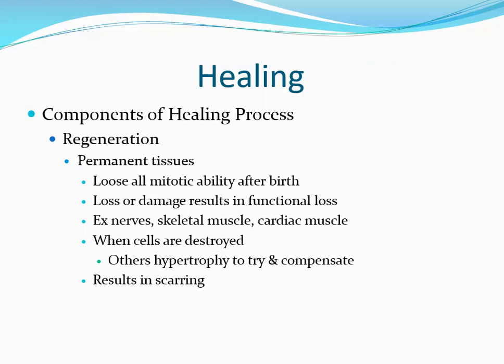The last type is permanent tissue, which loses all mitotic ability shortly after birth. Loss or damage results in functional loss — the only option is to repair the damage by making scar tissue or connective tissue. These include nerves, skeletal muscle, and cardiac muscle. When some cells are destroyed, others in the area may hypertrophy to compensate, but most likely you will see scarring.